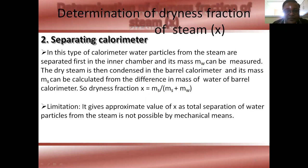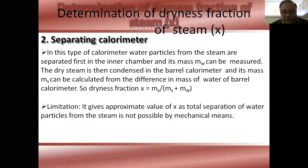This is the separating calorimeter. In this type of calorimeter, water particles from the steam are separated first in the inner chamber and the mass of water, MW, can be measured. Dry steam is condensed in the barrel calorimeter and its mass can be calculated from the difference in mass. The dryness fraction x is equal to MS divided by (MS plus MW), where MS is the mass of steam and MW is the mass of water.